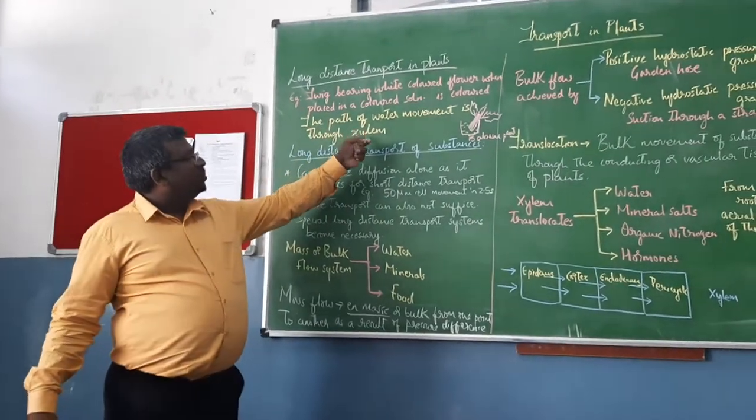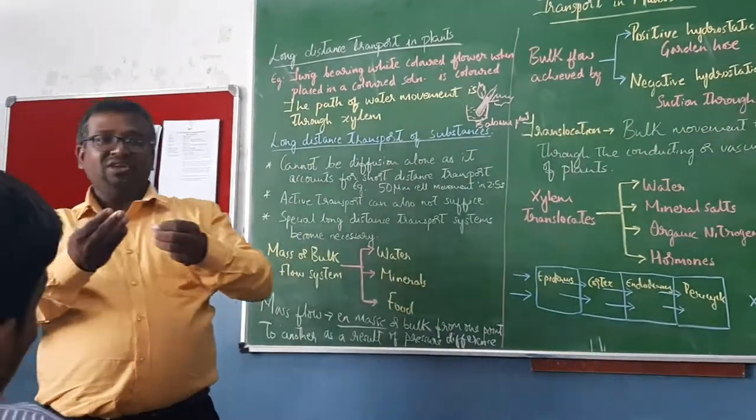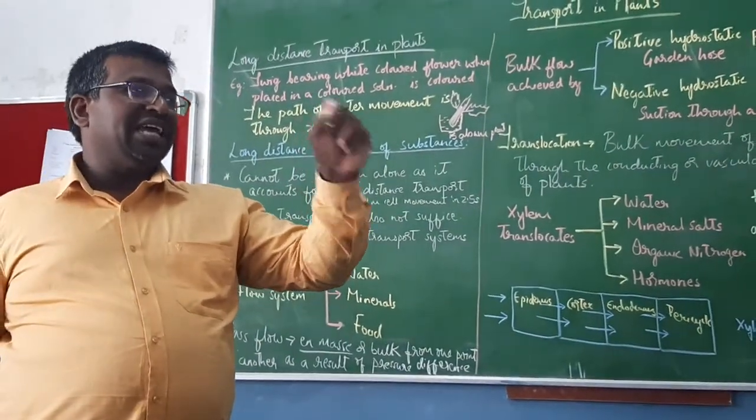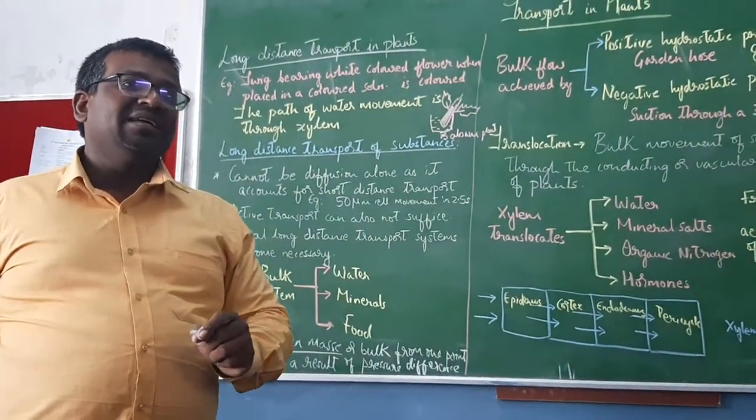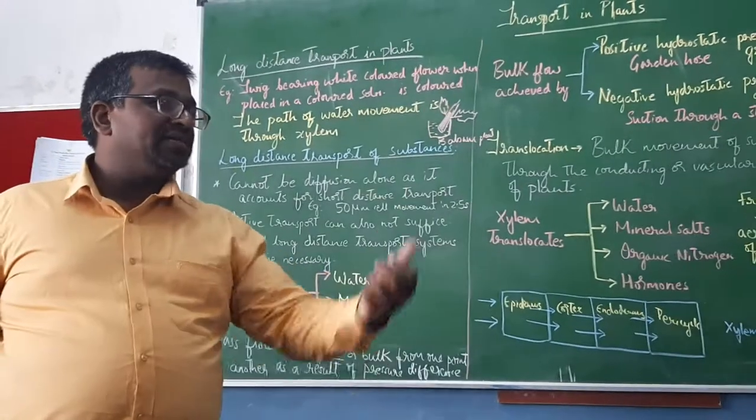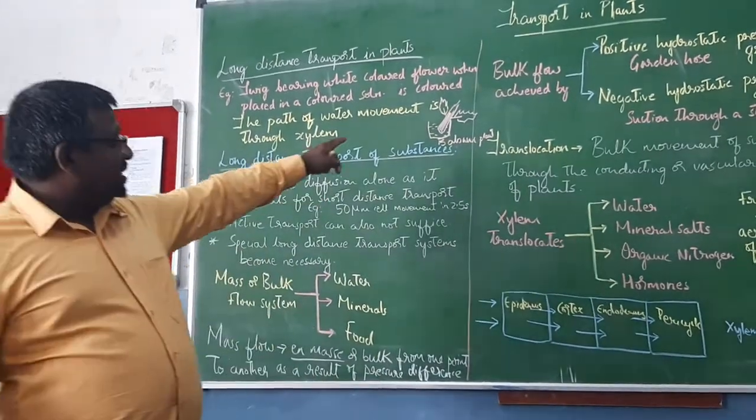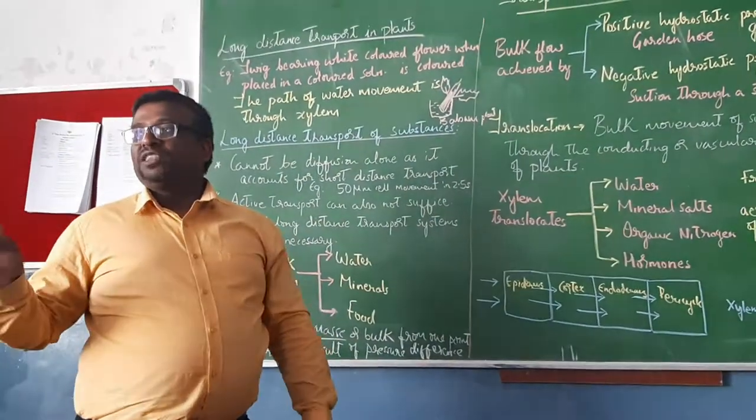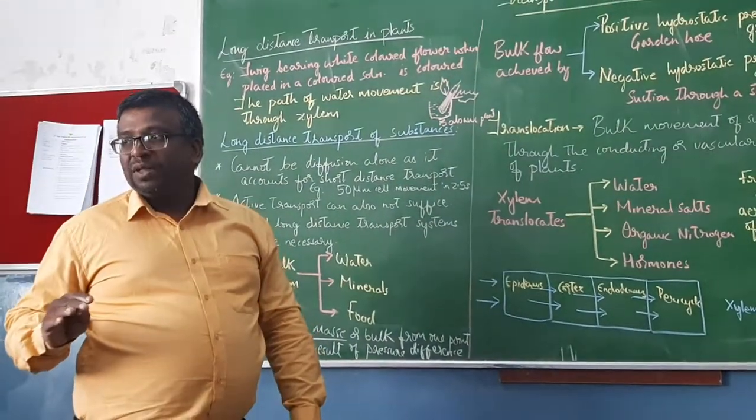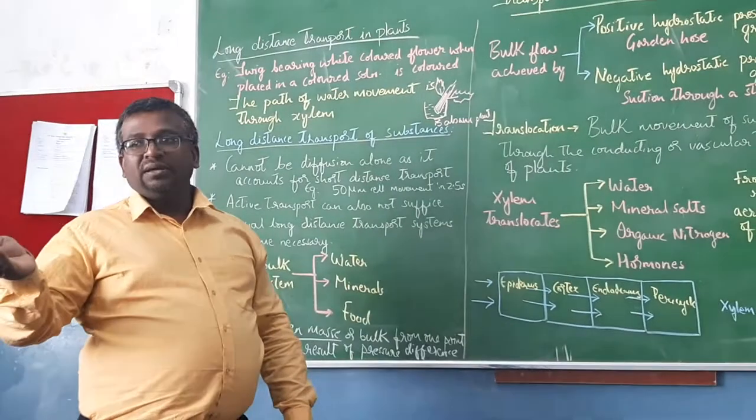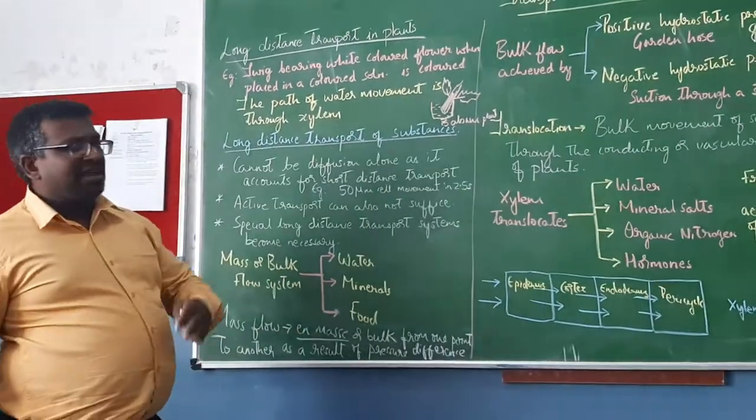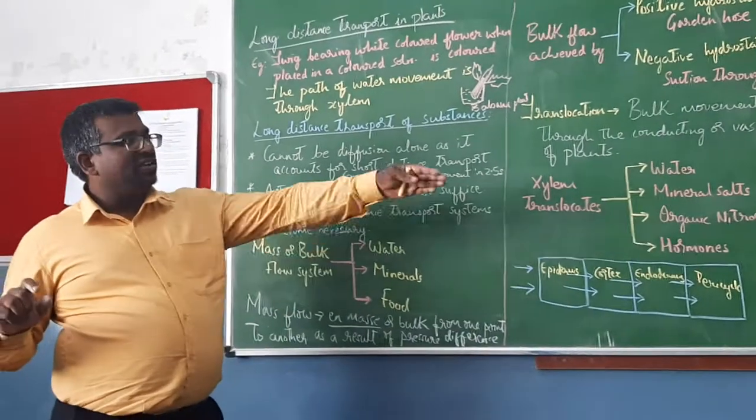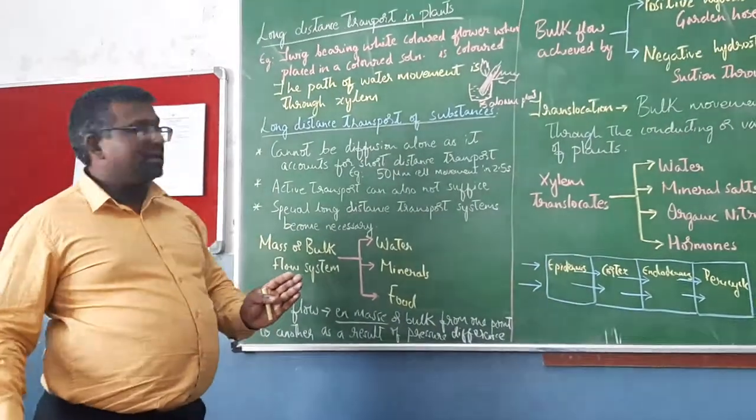The path of water movement is through xylem. When you take a section of that orchid and observe it in the microscope, you find that only the xylem would be stained, which indicates that this colored solution has passed through xylem. There is an experiment - balsam plant experiment to demonstrate the pathway of ascent of sap or translocation of water. Mechanism will discuss later. There are many theories but the most accepted theory will be discussing at the end of the session.